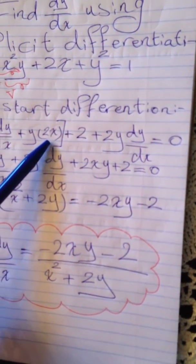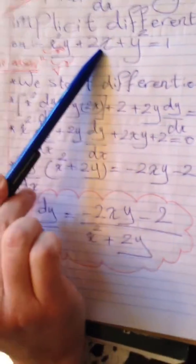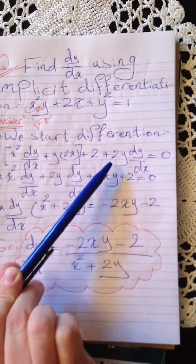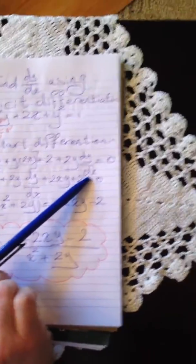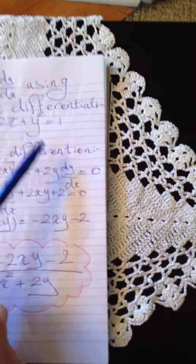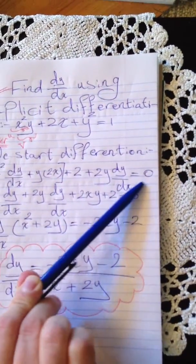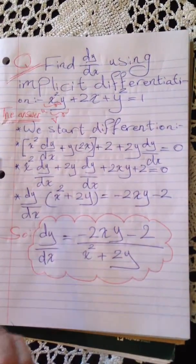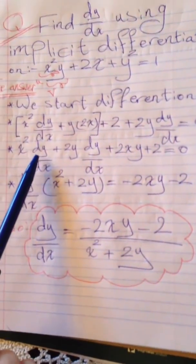For the rest of the equation, 2x's derivative is 2, y² is 2y dy/dx, and the derivative of every constant is zero. Now we collect the dy/dx terms together. We have x² dy/dx plus 2y dy/dx plus the rest of the equation.